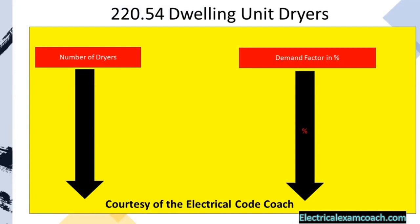When we get to Table 220.54, we're always going to read the black bold heading to make sure we're in the right table. We start on the left-hand side and find our number of dryers, then use a straight edge and come over to find our demand factor in percentage. You have to be very careful with these titles: sometimes they're listed as a replacement value and just say 'demand,' and in other tables it'll say 'demand factor in percentage,' which is just a multiplier.